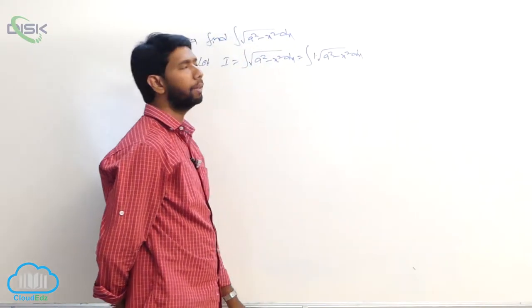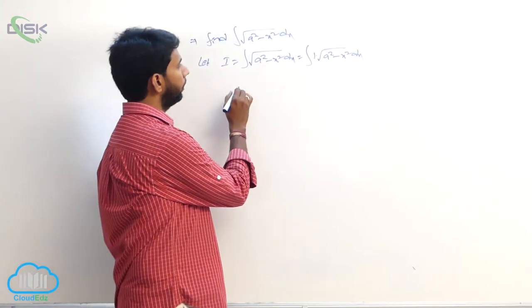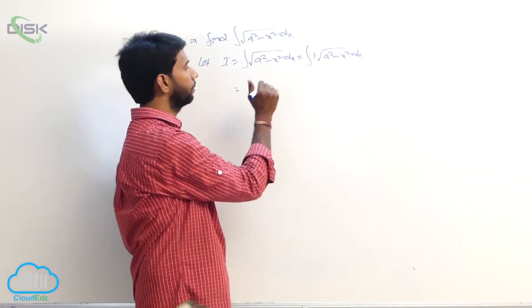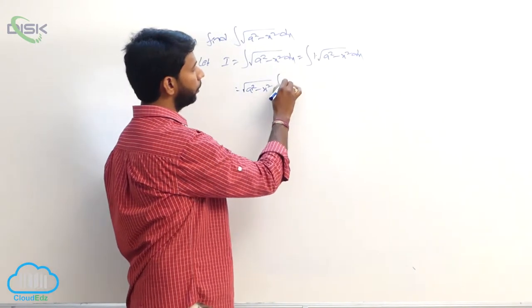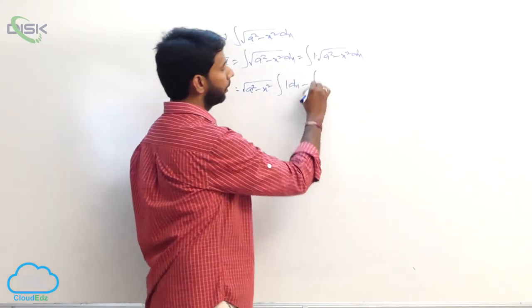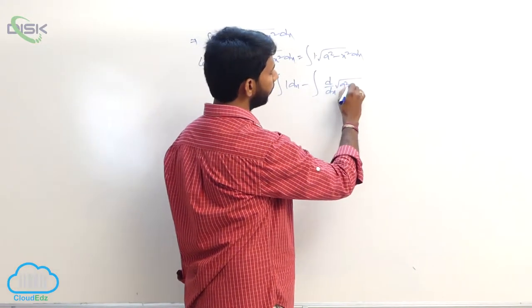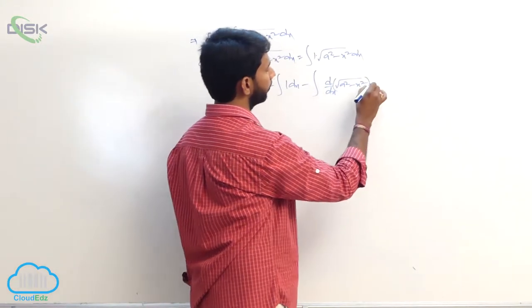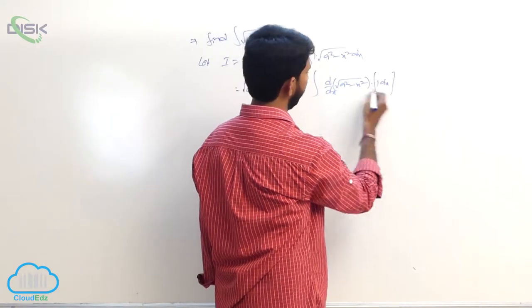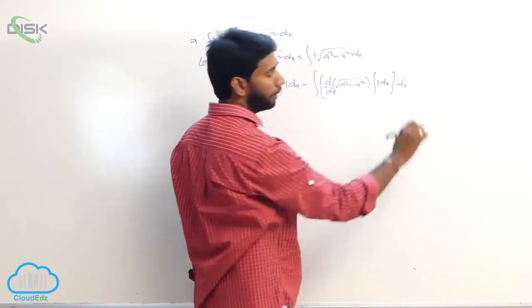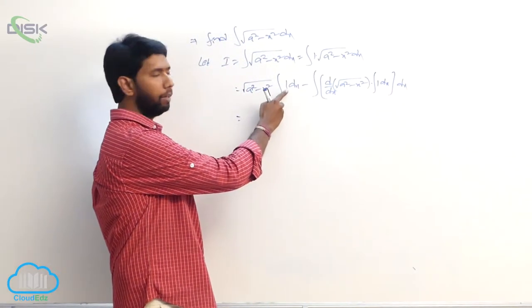Apply integration by parts: root of a square minus x square into integral of 1 dx minus integral of d by dx of root of a square minus x square into integral of 1 dx, whole dx. Integral of 1 dx value is x.